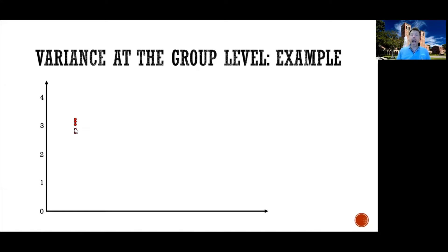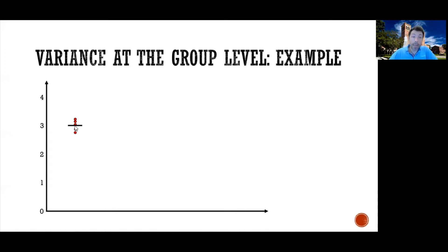These five dots represent how much better on each day the participant did when using my strategy versus not. Overall, on average, this participant had about a three point advantage when using my strategy versus not. The average effect is three, but you notice that sometimes the participant got exactly three, but other times the advantage was a little less and other times a little more — so there was some variability around it.